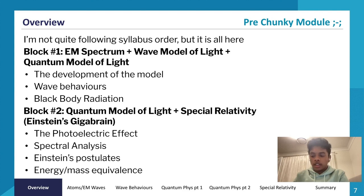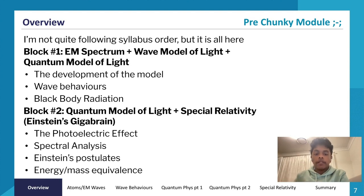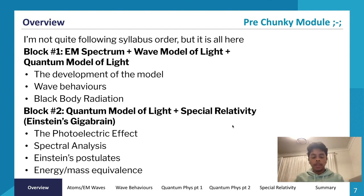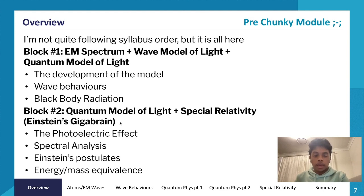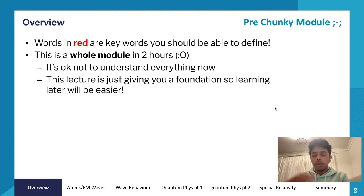In block two we'll look at the quantum model of light and special relativity — the photoelectric effect, spectral analysis, Einstein's postulates, and energy-mass equivalence. Quick disclaimer: this is only two hours, so don't feel bad if you don't understand every detail. The purpose is to build a foundation so that learning in school will be easier. Don't waste time taking notes — focus on understanding the concepts.